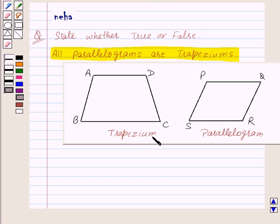Here we have a trapezium and a parallelogram. Let's recall the definition of a trapezium. It says in a trapezium, one pair of opposite sides is parallel. That is AD is parallel to BC.